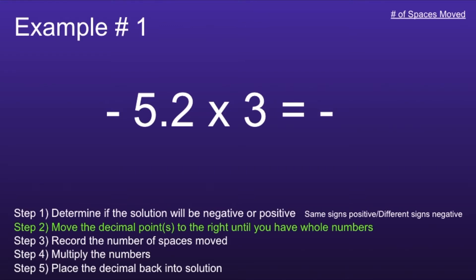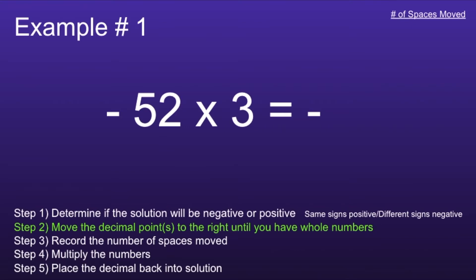Step 2: Move the decimal points to the right until you have whole numbers. In this problem, we only have one decimal point, and that's in the first number. So we have to move that decimal point one space to the right to make the 5.2 become 52, which is a whole number. We want to record the number of spaces moved, as this is going to come back later in the problem. Notice at the top right of the screen I'm going to record that one space we moved.